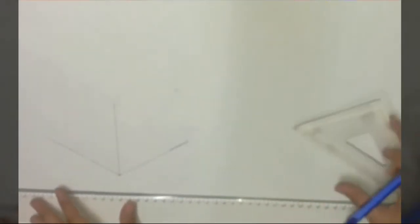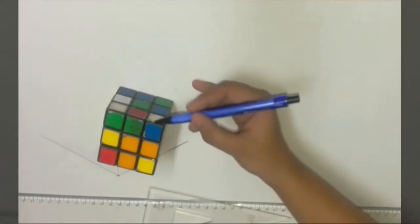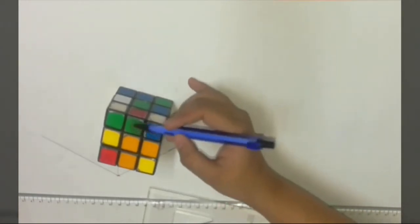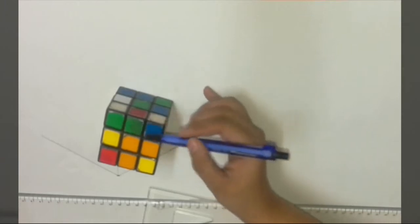Now we will take the dimensions that are 30, 30 and 30. As we can see on this cube, there are small squares present. So we have to draw these squares also.